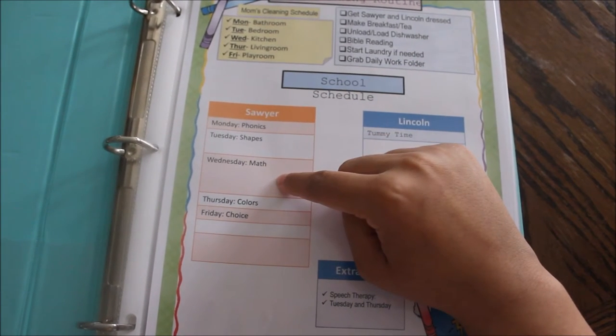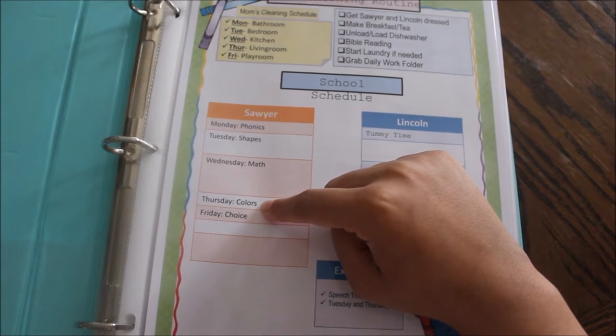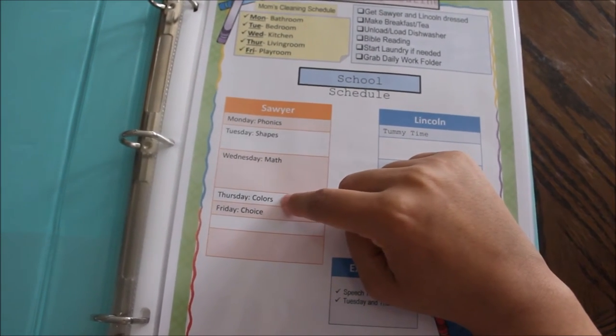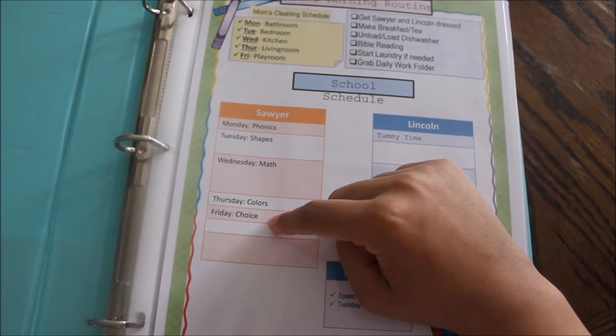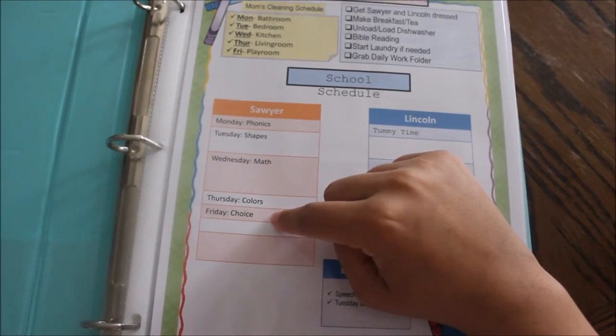Wednesday is math. The number this week is the number one. Thursday is colors. We do have a color of the week. This week is red. And then Friday is choice, so something fun. So like flashcards or this week we have something fun with animal matching.